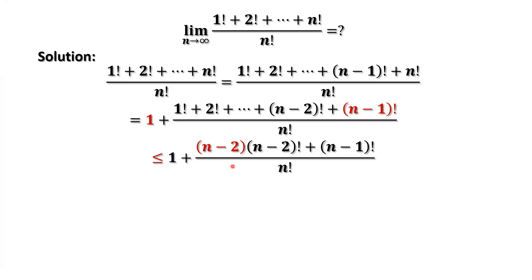Now, if we increase each term before n minus 2 factorial by n minus 2 factorial, then we should have this inequality sign, less than or equal.